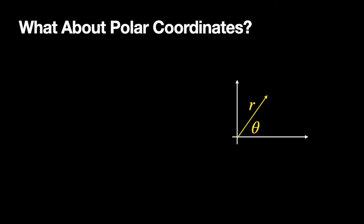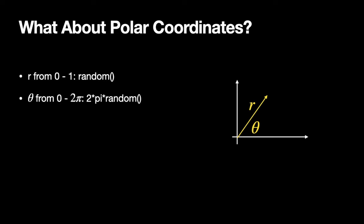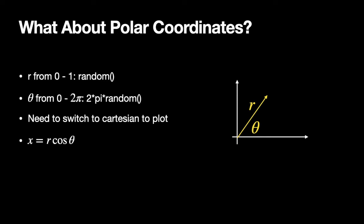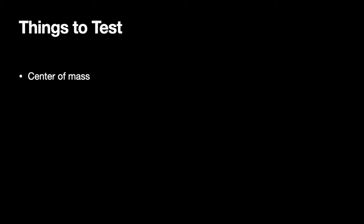Now here's the other way — polar coordinates. Instead of x and y, we use the distance from the origin r and the angle theta. I still have two coordinates for random numbers. For r, I go from zero to one — just random. For theta, from zero to two pi — two times pi times random. Pi is built into GlowScript vPython, so I can just type it as pi. Then to plot, I convert back: x equals r cosine theta, y equals r sine theta.